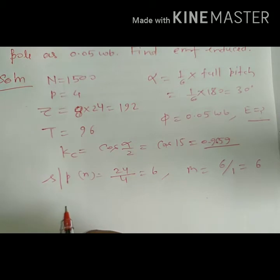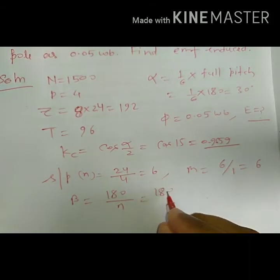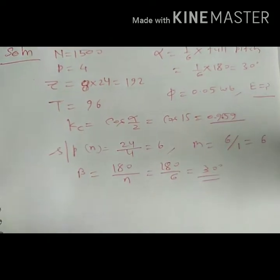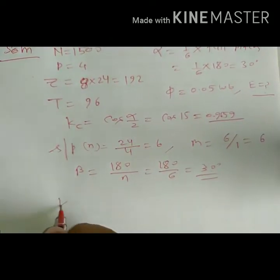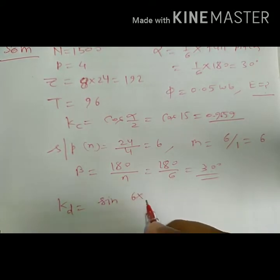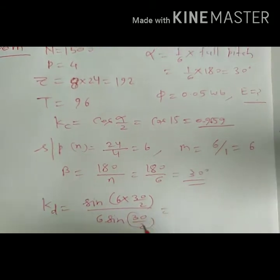Slot angle beta will be 180 divided by slots per pole, that is 180 by 6, which is 30 degrees. Now find the distribution factor Kd: sine of (m·beta/2) — where m is 6 and beta/2 is 15 degrees — divided by m times sine(beta/2), which is sine(15 degrees).